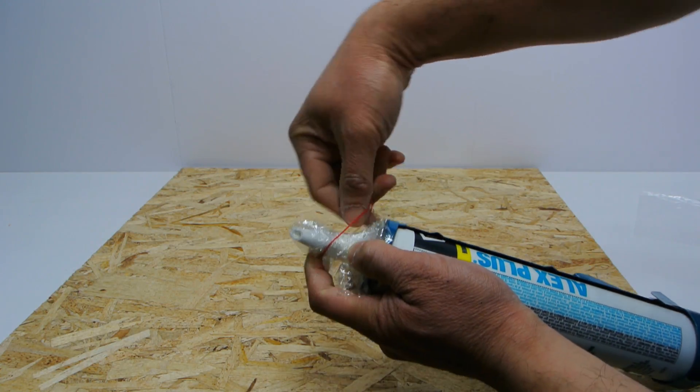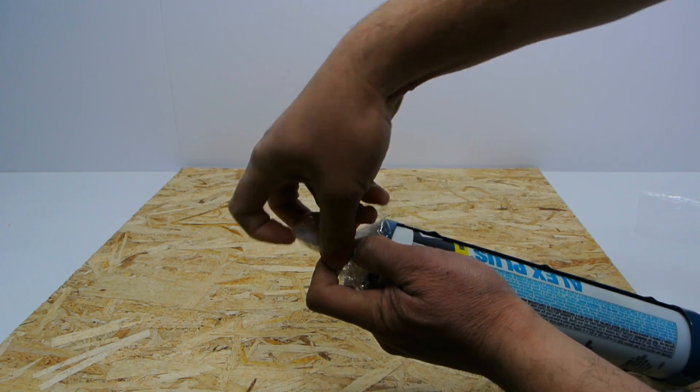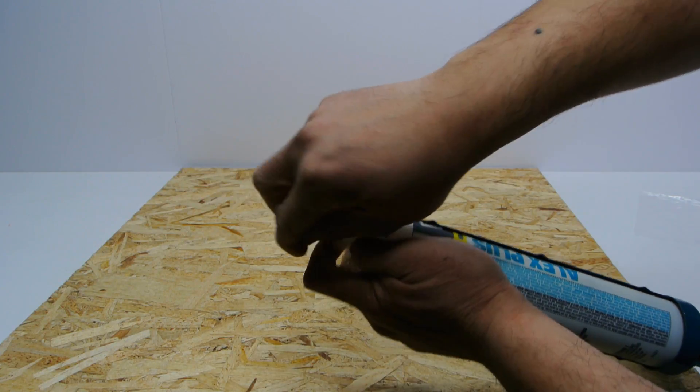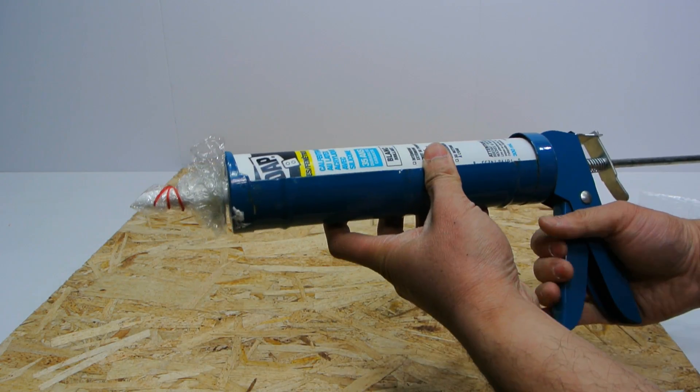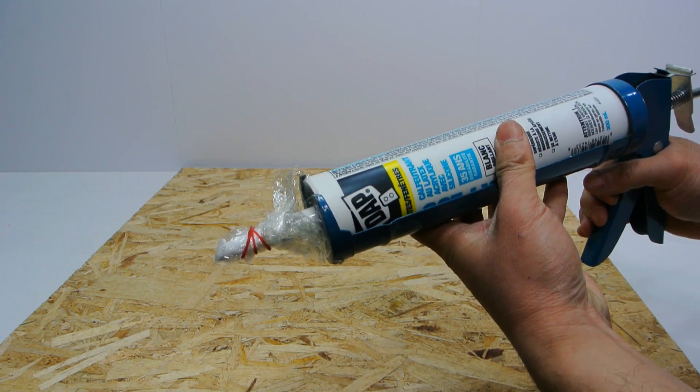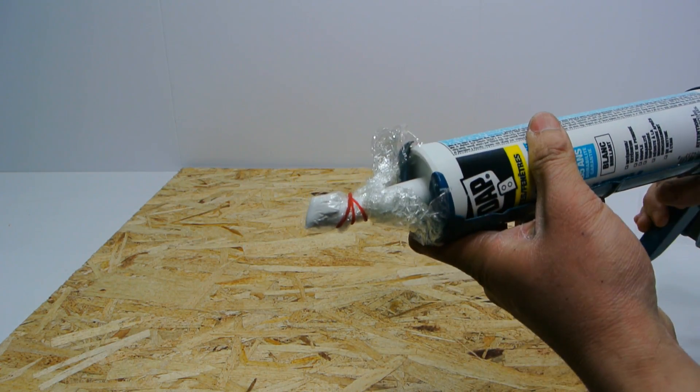Wrap the rubber band around the plastic. Squeeze some caulking into the plastic so it fills the void left at the end of the tip.